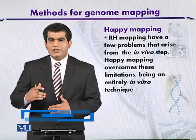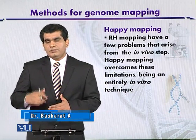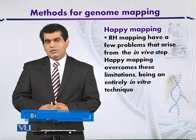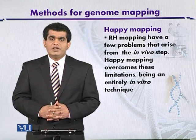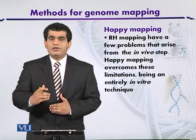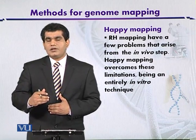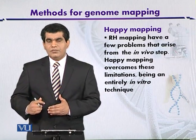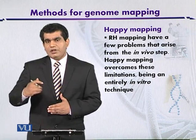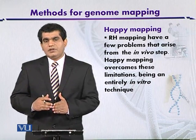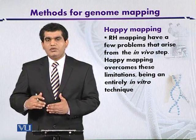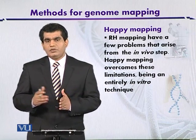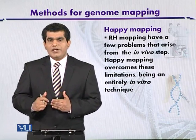This technique got the name 'HAPPY mapping' from 'haploid genome.' In other words, the haploid genome here means that a low concentration of the target DNA is analyzed after fragmentation, because a minute quantity has been analyzed after a series of dilutions. We expect that we have analyzed the haploid genome — or in other words, a low quantity of DNA.